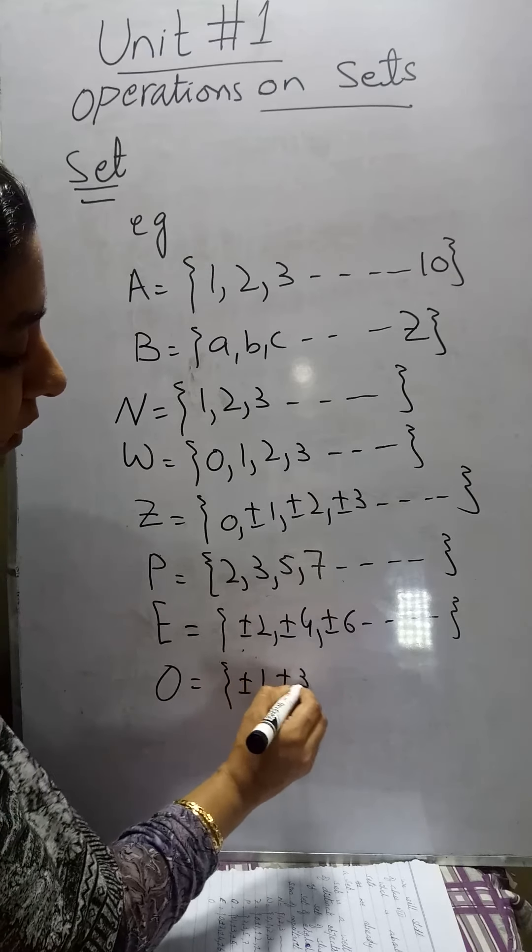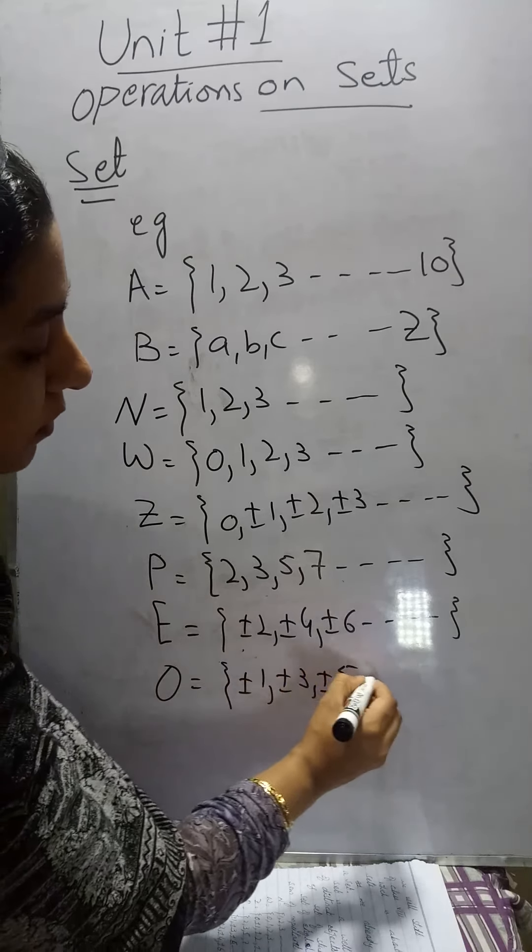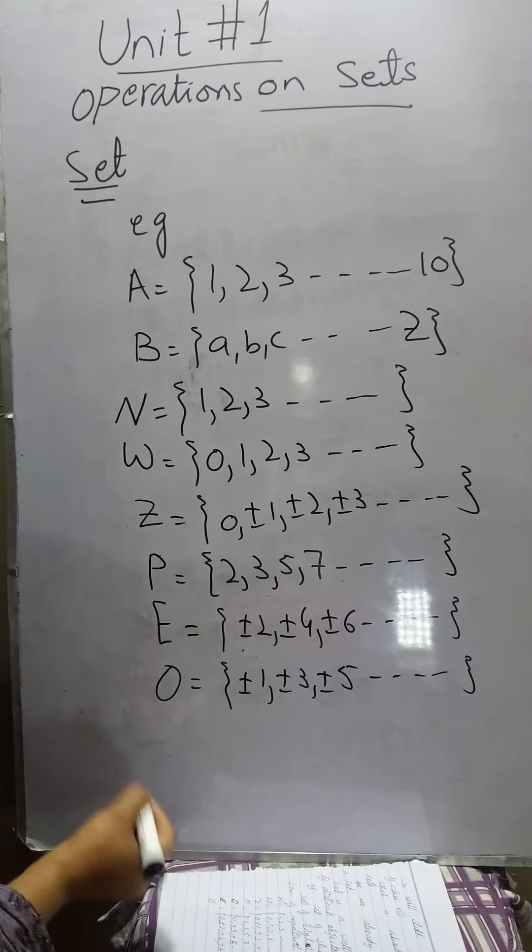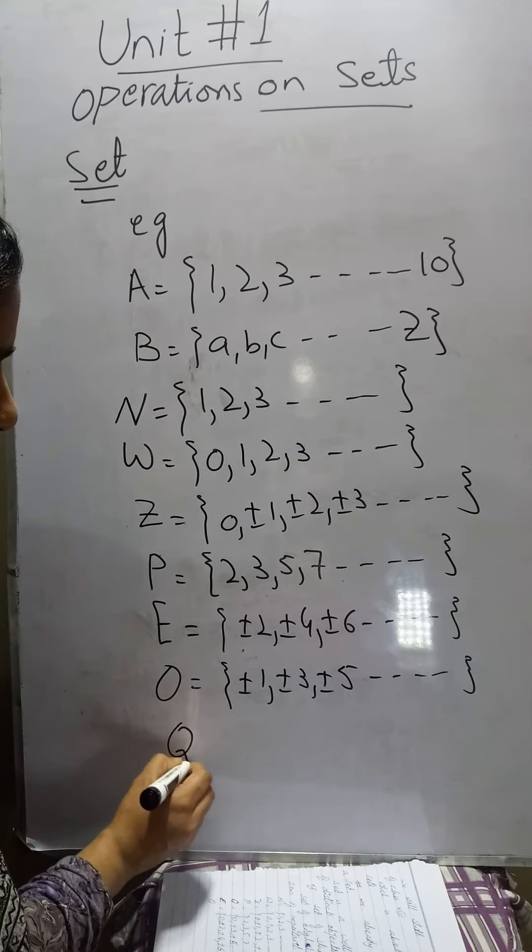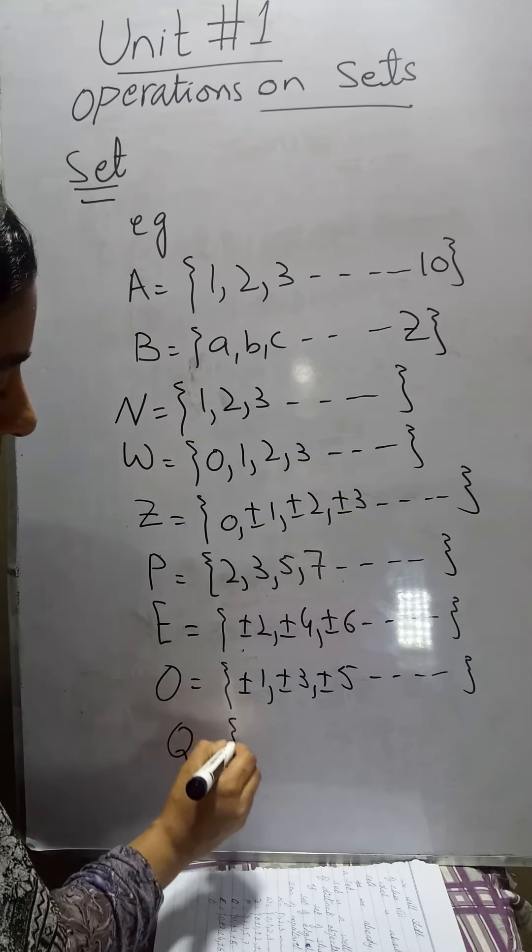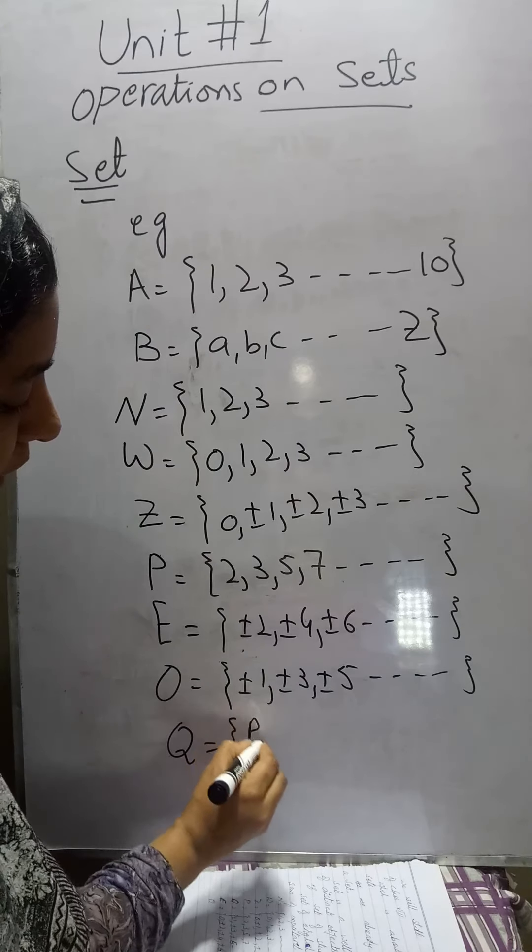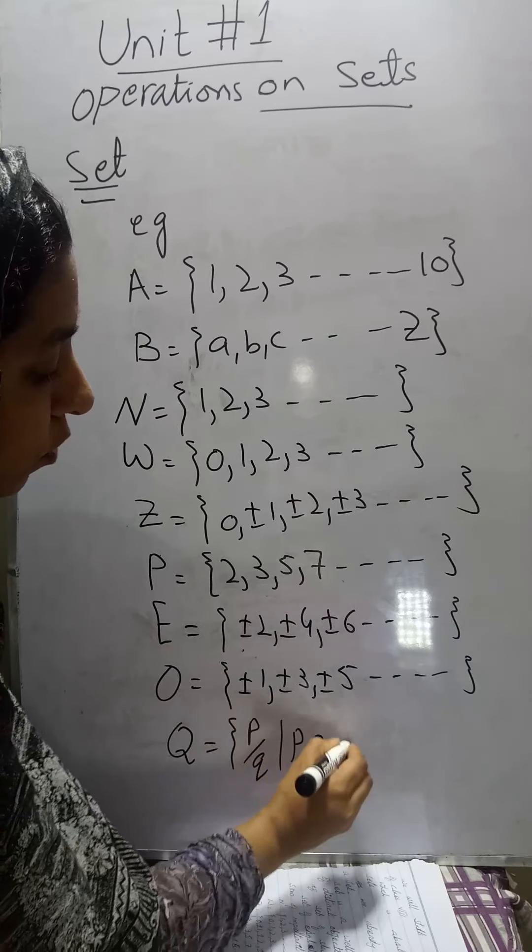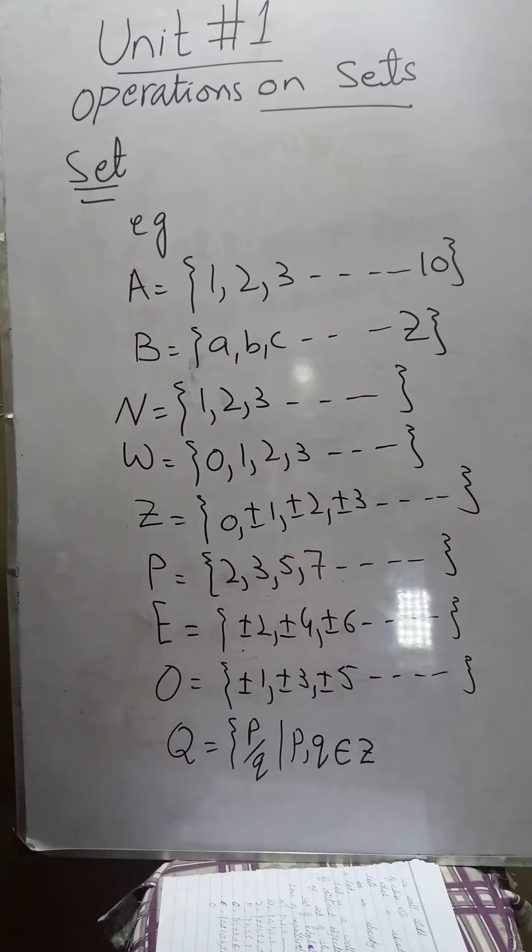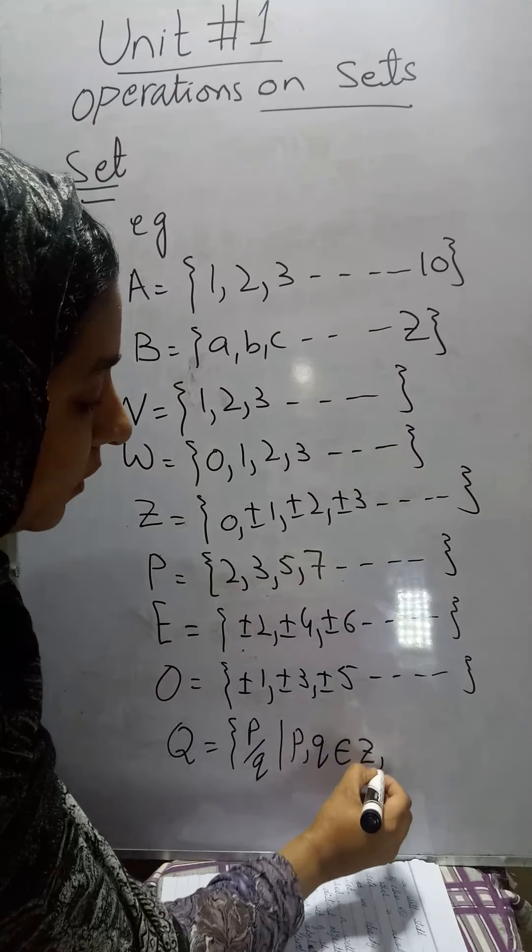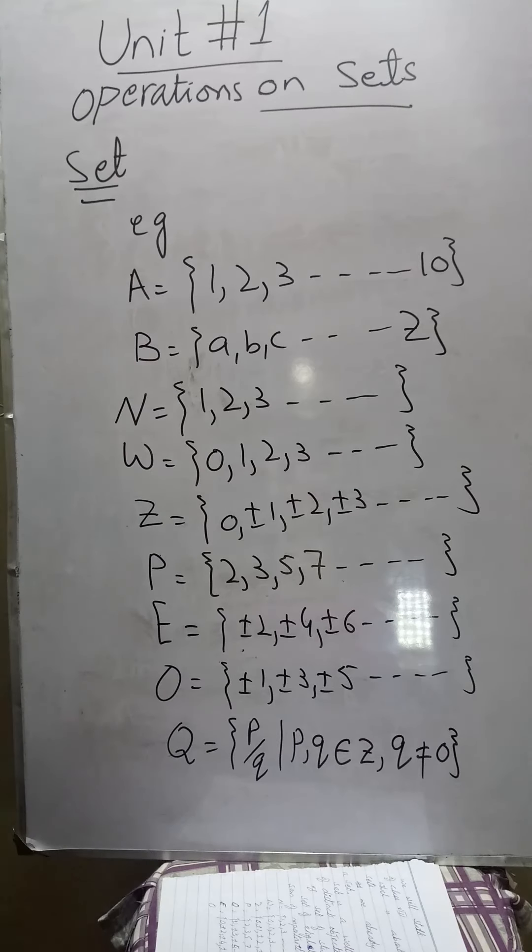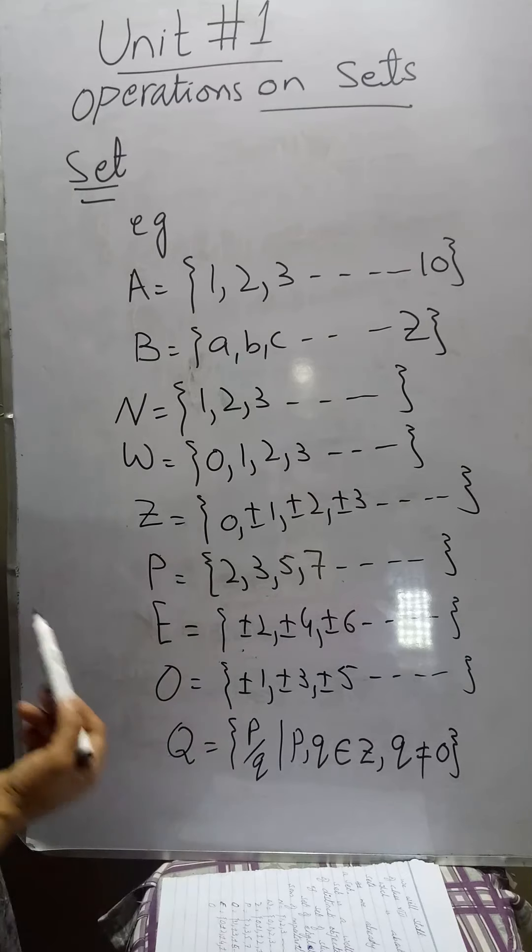The set of rational numbers is written as the letter Q and is given by p over q, such that p and q both belong to the set of integers, and q is not equal to zero. Q should not be equal to zero since any number divided by zero is undefined.